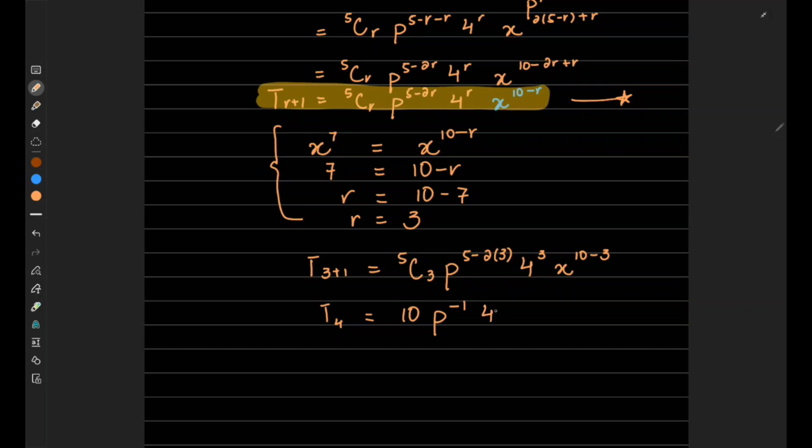And 4^3 is 64, and x^7. So we will be writing 10/p times 64x^7.